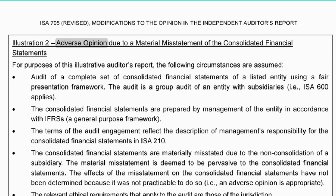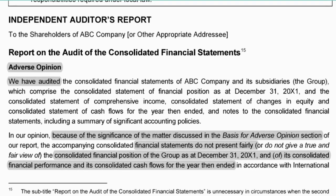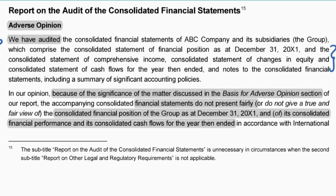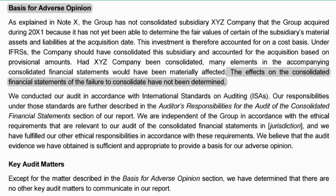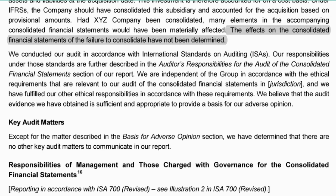For an adverse opinion illustrative example: again the report starts with 'We have audited' and includes all the financial statement details. The opinion paragraph references the basis for the adverse opinion, and the basis section explains what problems with the financials led to the conclusion that they are materially misstated in multiple aspects — hence the adverse opinion. For key audit matters, if the matters are only related to the reason for the adverse opinion, you simply reference the basis for adverse opinion paragraph rather than repeating the detail.